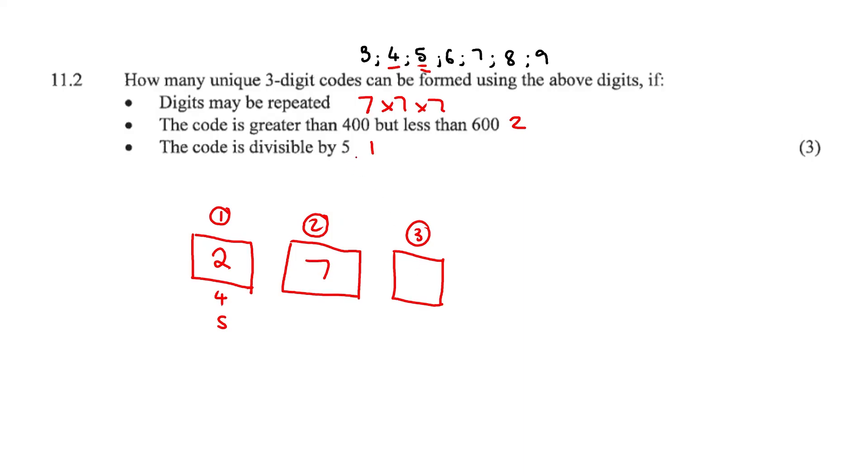And the code is divisible by 5. Only one possible option, the 5. And we always multiply our blockies out. 2 times 7 times 1 is equal to a grand total of 14. And that's it.